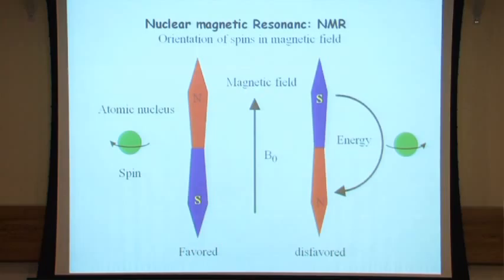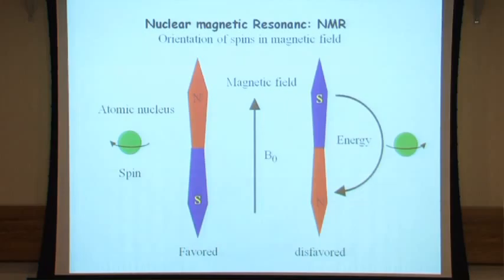Since we have a magnetic moment, we can depict it as a magnetic needle which, if we have an external magnetic field B-zero, will orient in this field. Since we have spin one-half, we have only two states — the spin-up and spin-down state. The favored state is the one in which the magnetic moment aligns with the B-zero field, and the disfavored one is the one in which it opposes, so there is an energy difference between the two which can then be used.